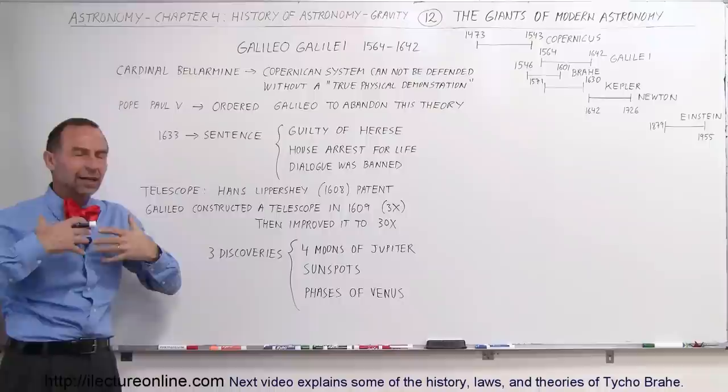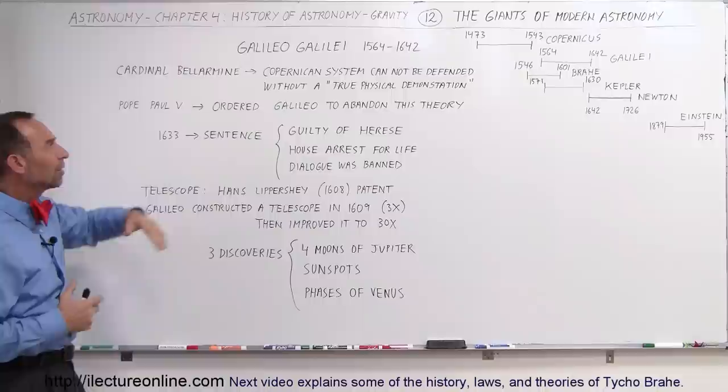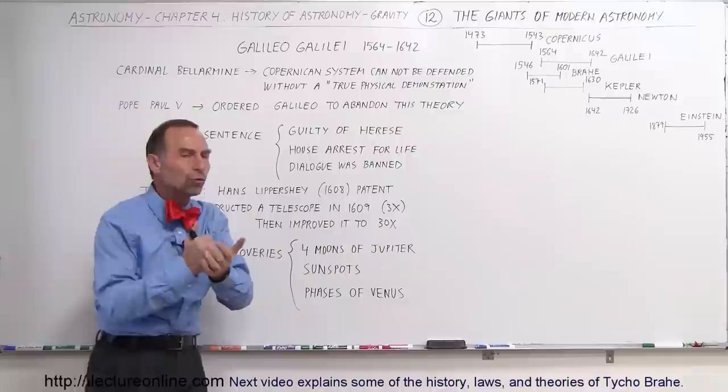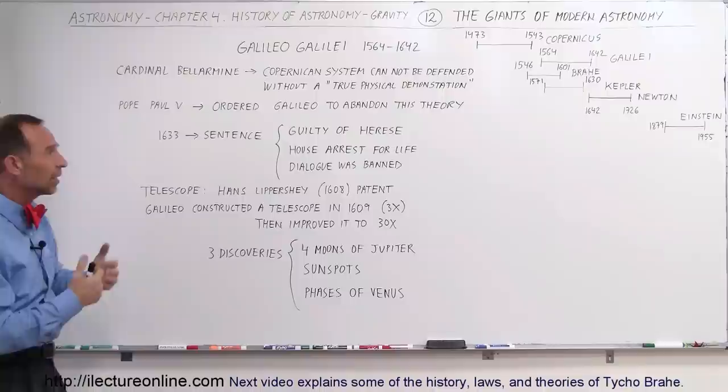Cardinal Bellarmine, who was responsible for the region where Galileo lived, said that the Copernican system cannot be defended without a true physical demonstration. They said we're not buying into this because you haven't proven it. That's very difficult to do, especially in those days, with the lack of technology that we have today.